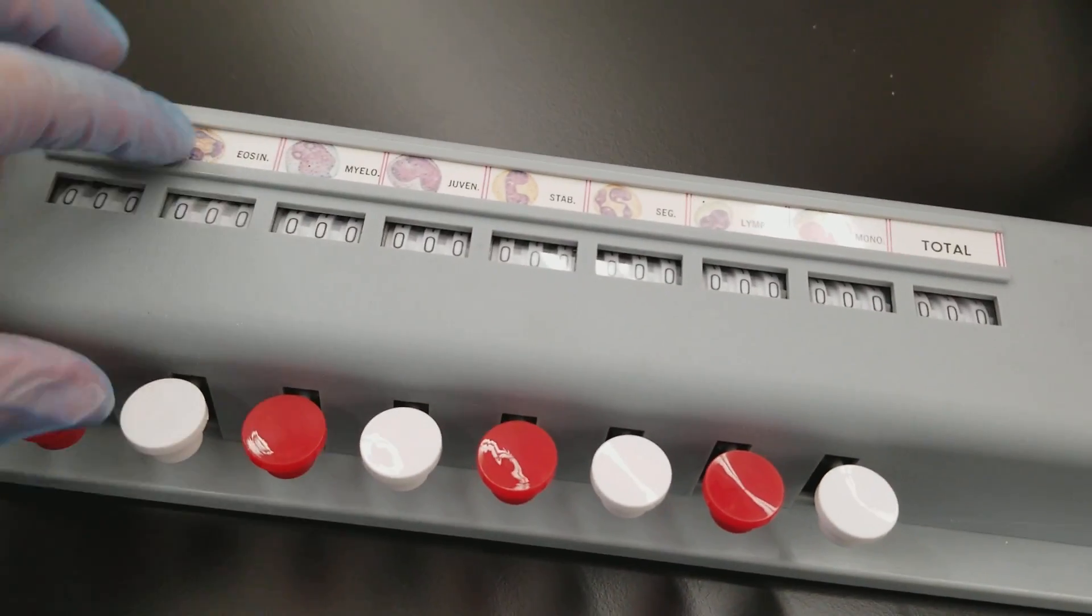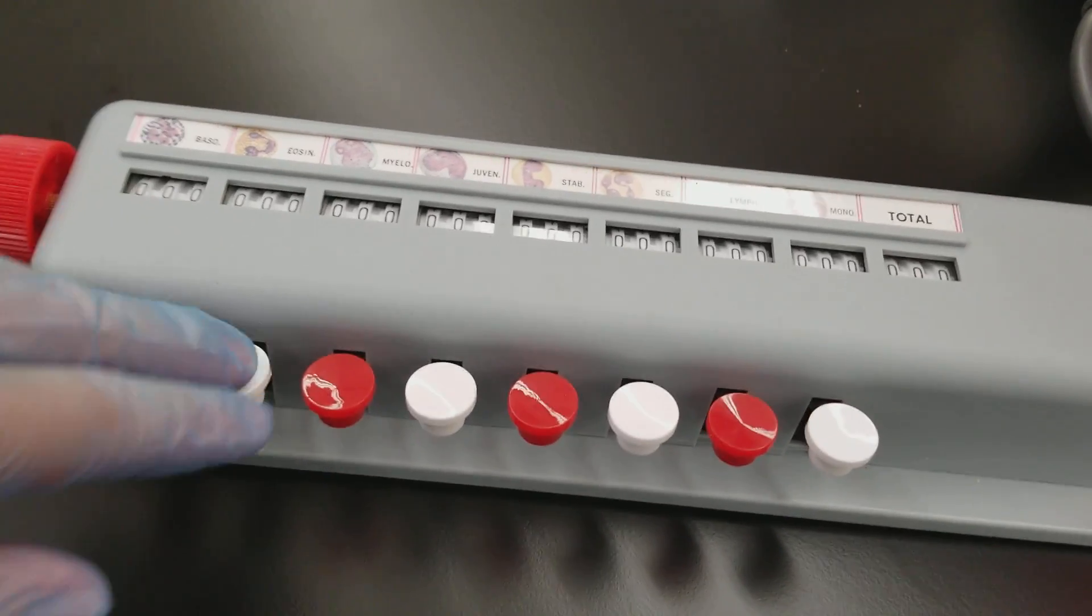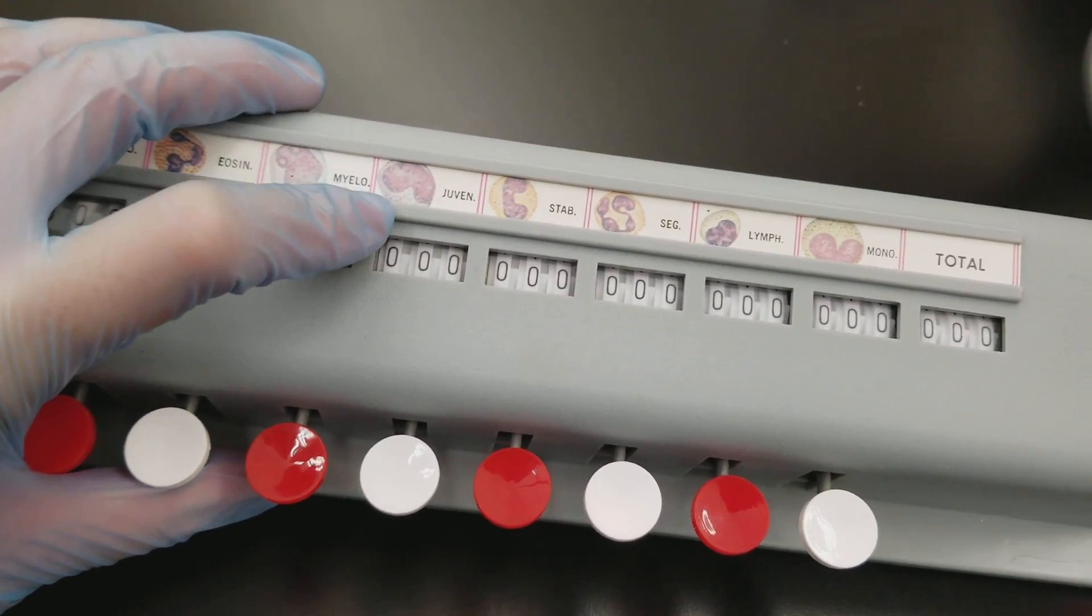You don't have as many eosinophils and basophils. So that's why they're out at the end. You don't usually have a lot of immature whites either.